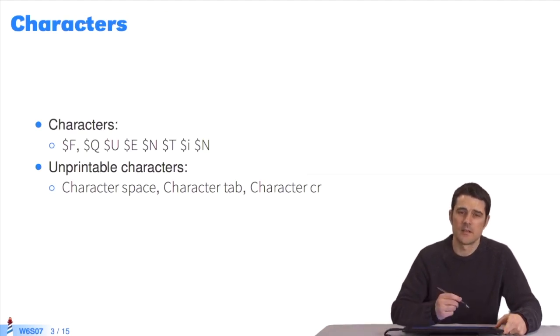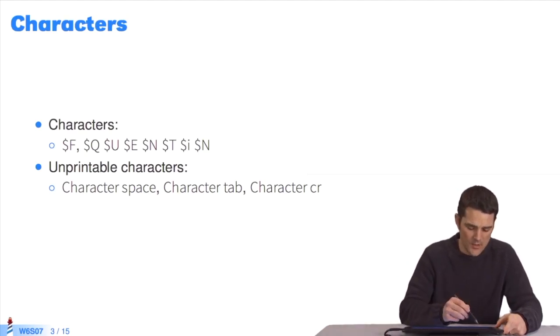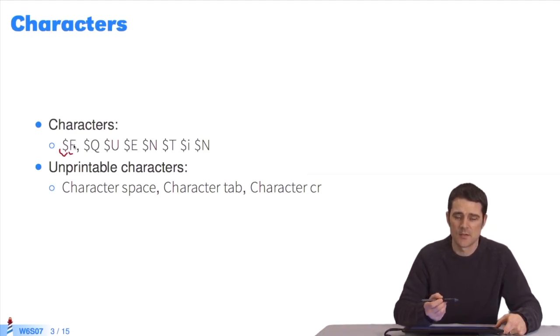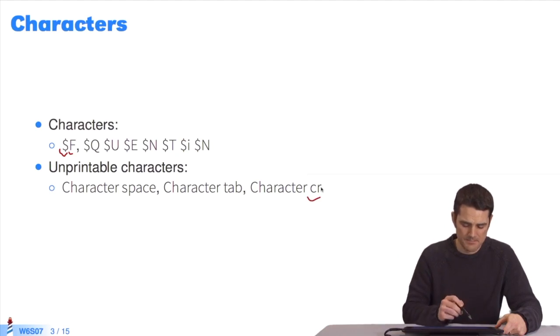Characters. In Pharo, characters start with a dollar sign, followed by a letter. This is to represent literal characters. Non-printable characters that do not have a form use space, tab, or carriage return, which jumps to a new line. We send a message to this character class to get this character.